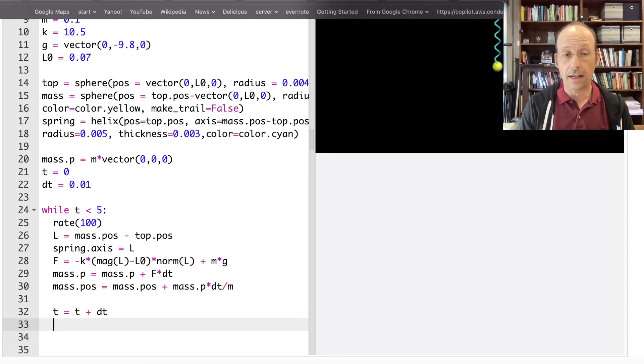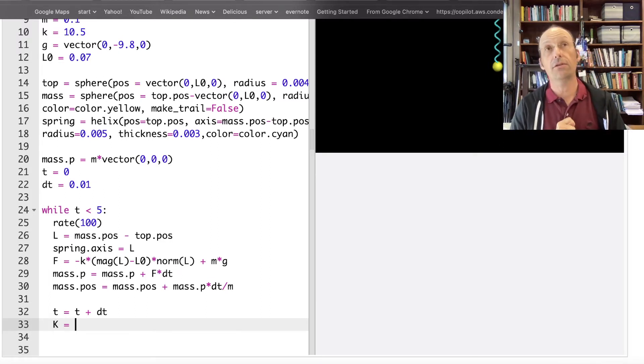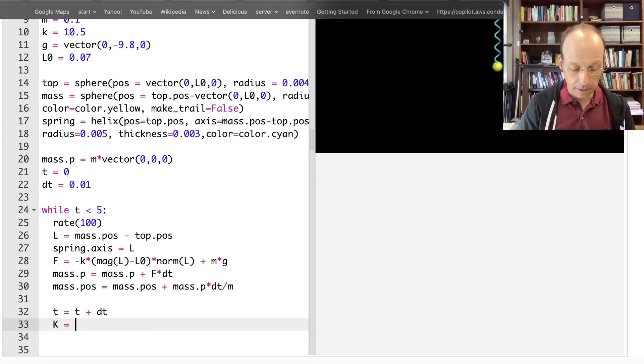The first thing I'm going to do is calculate the kinetic energy. So K is 1 half MV squared. But that's a scalar value. So I need the magnitude of the velocity squared. But I don't have velocity. I actually have momentum. So I'm going to use P squared over 2M. It's the same thing as kinetic energy.